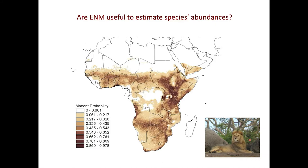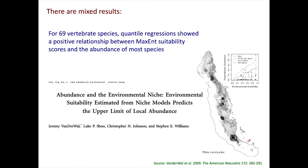The question here is whether ecological niche models can be used to estimate the distribution of the abundance of species across its geographic range. The first person to address this question, at least in these terms, was Jeremy Vanderbilt from Australia. He used Maxent and had a set of species with abundance data across their geographic ranges, modeling their distributions and correlating the environmental suitability scores with abundance data using quantile regression analysis.